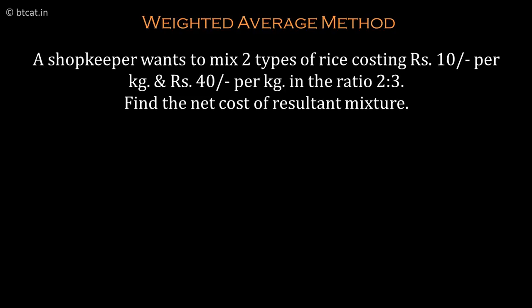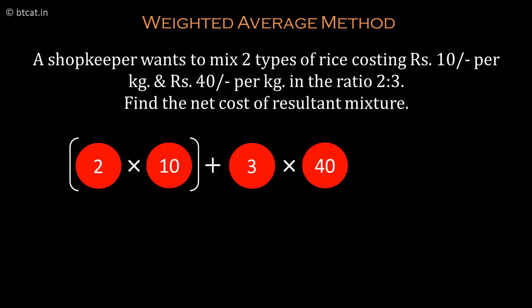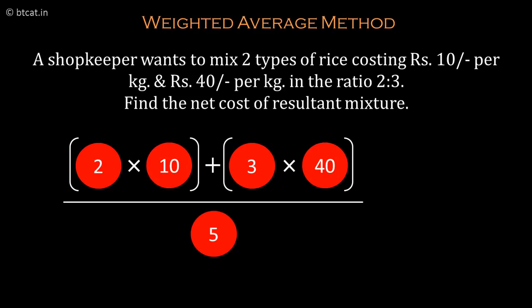This is a direct question of weighted average. We will do 2 into 10 plus 3 into 40, divided by 5, which is the total weight, to get the net cost of the mixture. Doing the calculation: 2 into 10 gives 20, 3 into 40 gives 120. 120 plus 20 is 140. 140 divided by 5 gives the answer: 28 rupees per kg. That is weighted average.